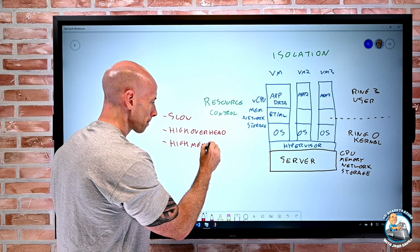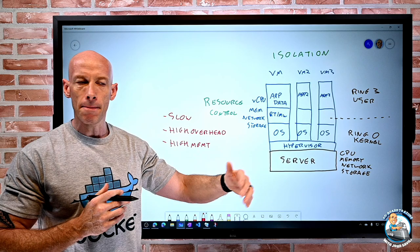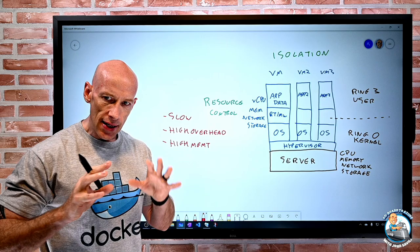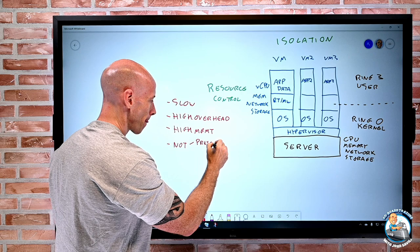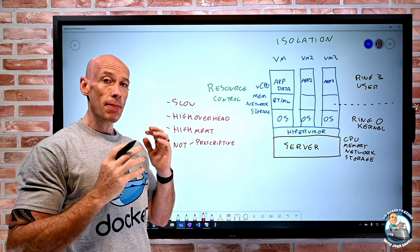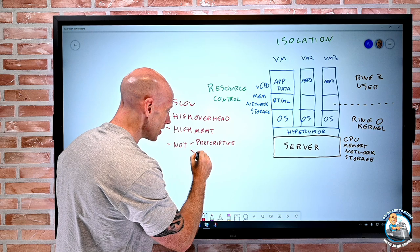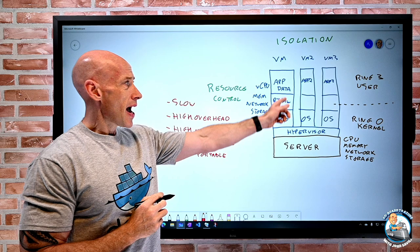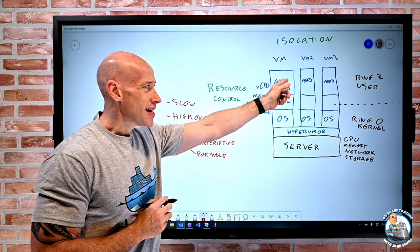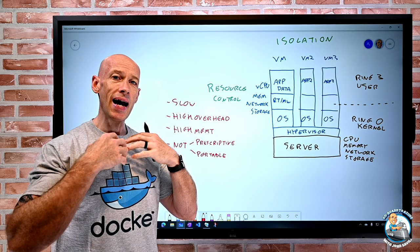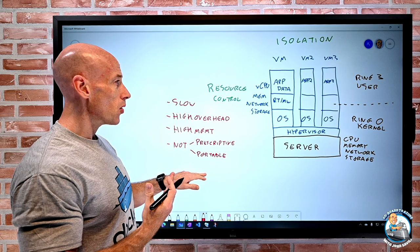There's high management overhead because they're a complete operating system — there's patching, backing up, antivirus, firewalls, a whole set of things to think about. Generally they are not prescriptive, though there are ways using PowerShell DSC, Chef, or Puppet to make the OS prescriptive. But generally they're not, so it's very hard to repeatedly create these things. They're generally not portable either — the app is very much tied to the operating system, and I can't easily take this complete configuration and apply it somewhere else. So I can't guarantee I'll always get the same result, and I get a lack of consistency.